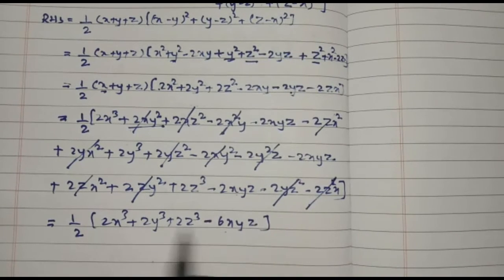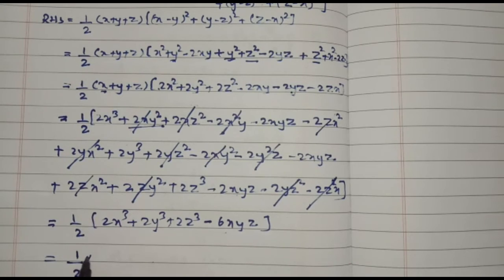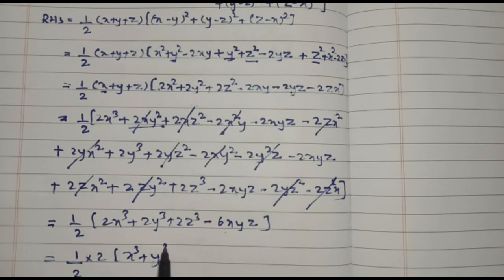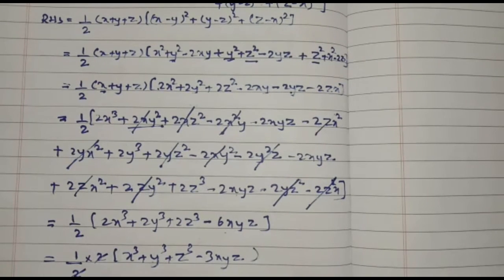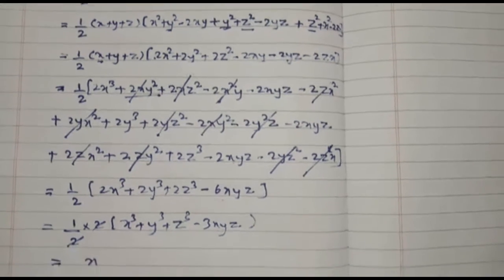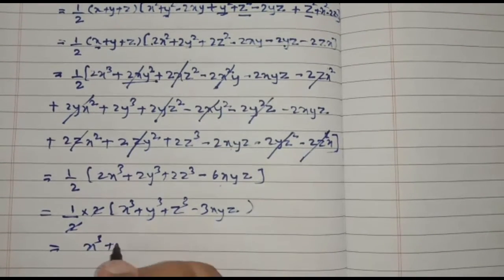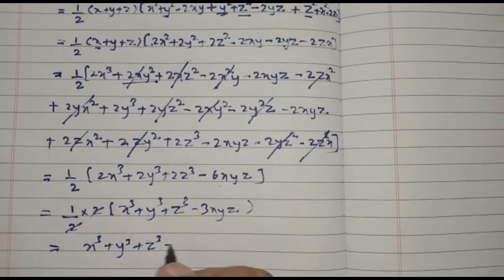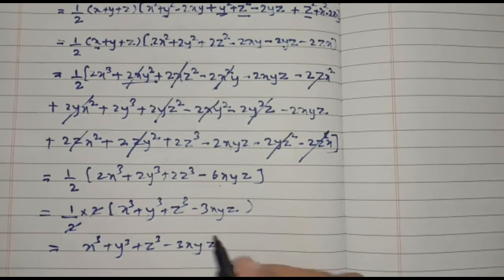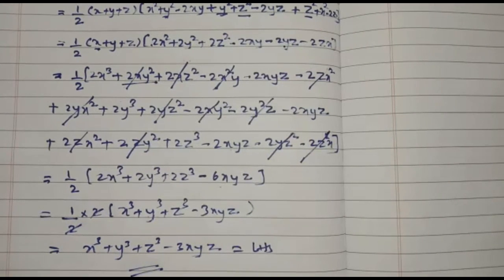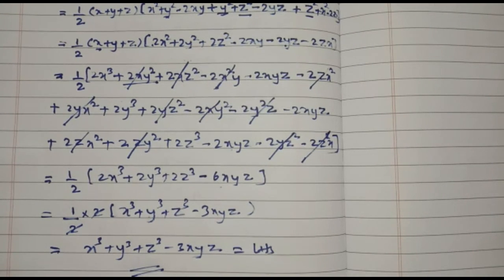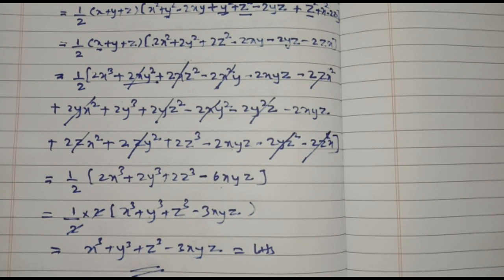Now 2 is common in all values: 1 by 2 into 2 gives 1. What remains is x cube plus y cube plus z cube minus 3xyz. The 2 gets cancelled and remaining is x cube plus y cube plus z cube minus 3xyz, which is equal to LHS. I hope you understood. If you have any doubt you can write in the comment section. Don't forget to like, share and subscribe the channel Technical Mathematics. Thank you for watching my videos.